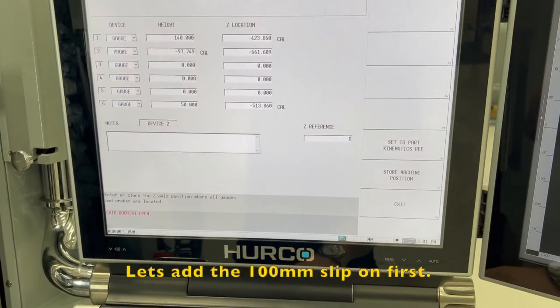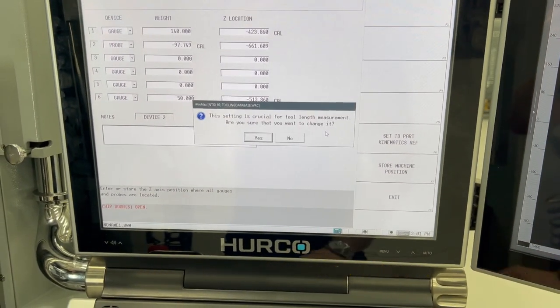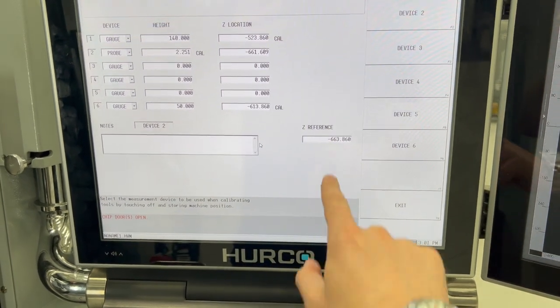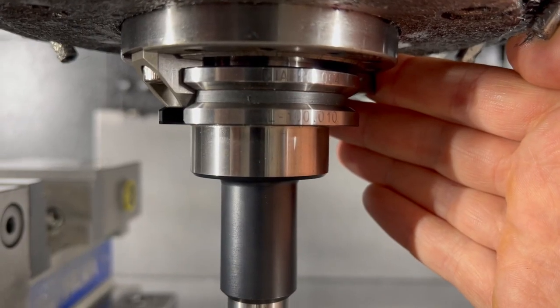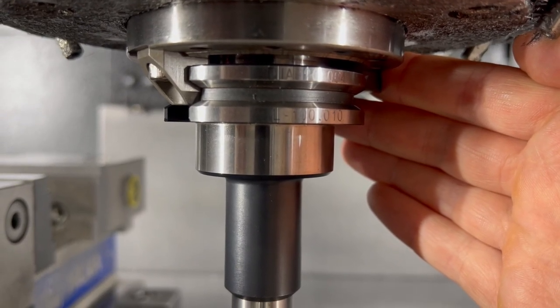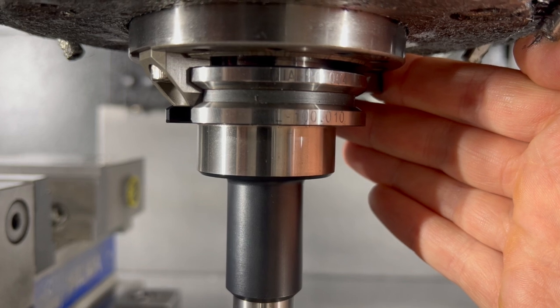So I'm going to go 100 minus, enter. Yes, that's now up by another 100 millimeters. Now if we look at our tool you can see this is 100.01 millimeters so we're also going to add that one.